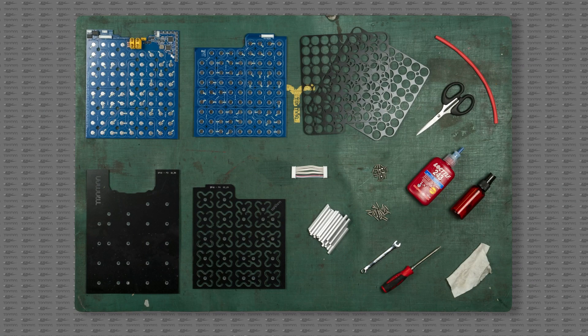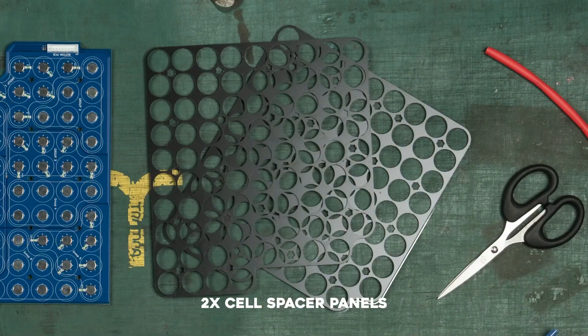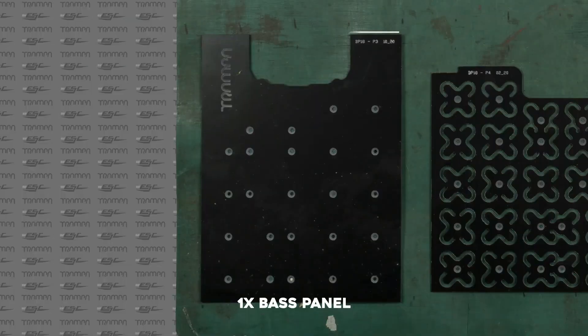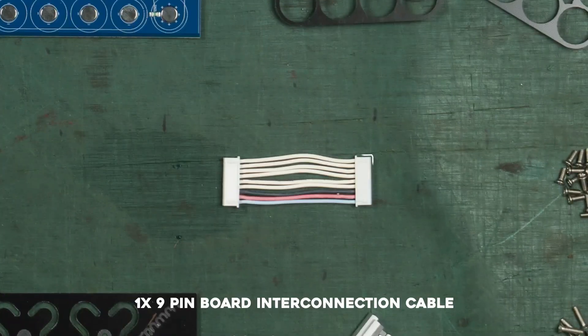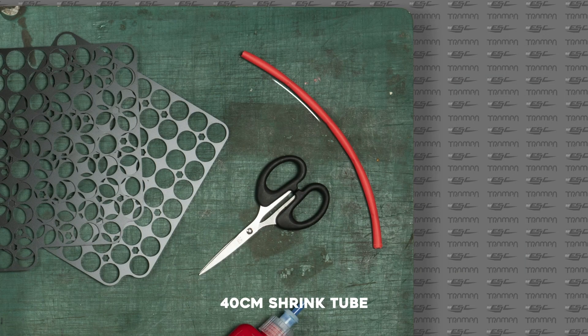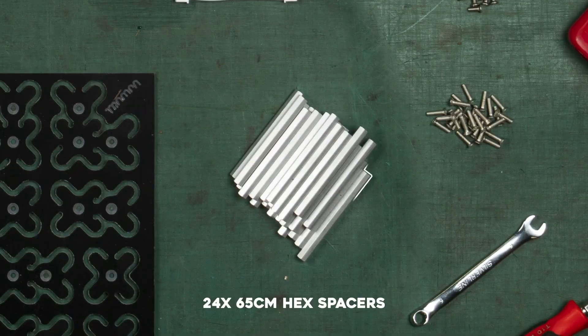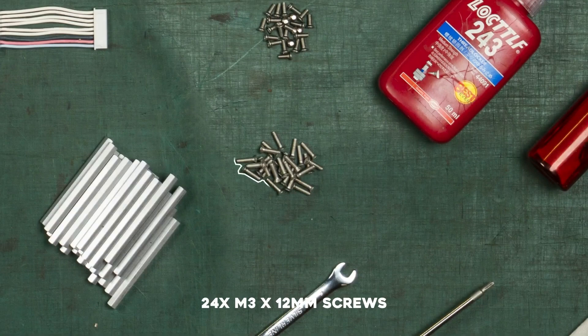When you receive your disassembled battery pack you will get 1 spring panel, 2 cell spacer panels, 1 base panel, 1 lower battery circuit board, 1 upper battery circuit board, 1 9 pin board to board interconnection cable, 1 40cm length shrink tube, 24 65mm hex spacers, 24 M3x12 screws, and 24 M3x8 screws.